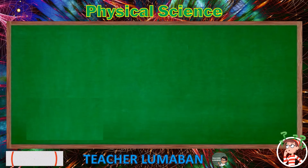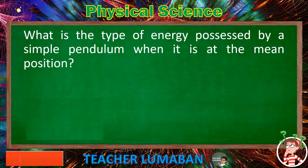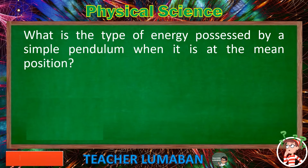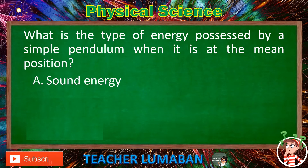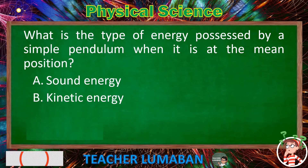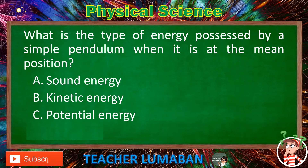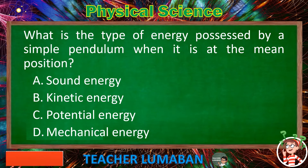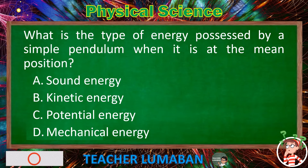What is the type of energy possessed by a simple pendulum when it is at the mean position? Letter A: Sound energy. Letter B: Kinetic energy. Letter C: Potential energy. Letter D: Mechanical energy.